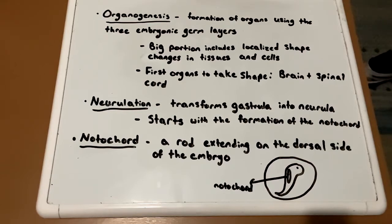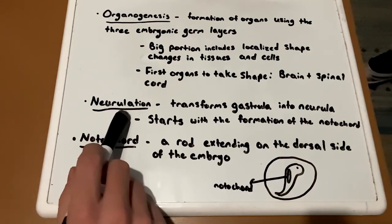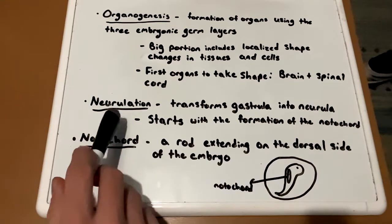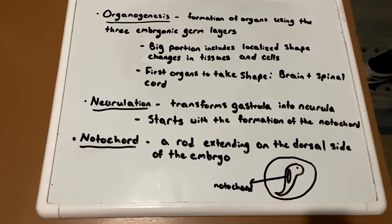The first organs to take shape are the brain and the spinal cord, and this process is known as neurulation, which transforms gastrula into neurula. Neurulation starts with the formation of the notochord, and the notochord is a rod extending on the dorsal side of the embryo, which is seen right here.